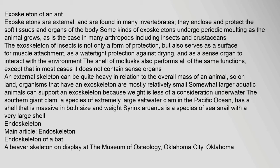An external skeleton can be quite heavy in relation to the overall mass of an animal, so on land, organisms that have an exoskeleton are mostly relatively small. Somewhat larger aquatic animals can support an exoskeleton because weight is less of a consideration underwater. The southern giant clam, a species of extremely large saltwater clam in the Pacific Ocean, has a shell that is massive in both size and weight. Syrinx aruanus is a species of sea snail with a very large shell.